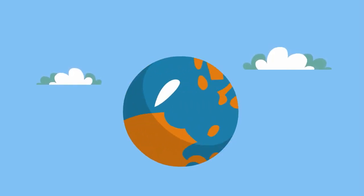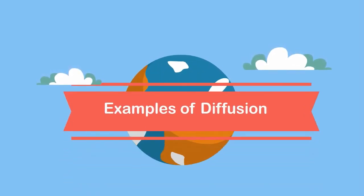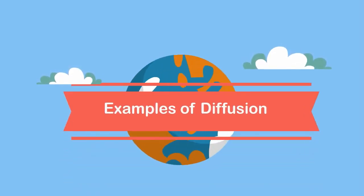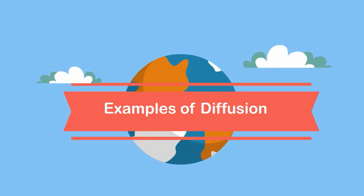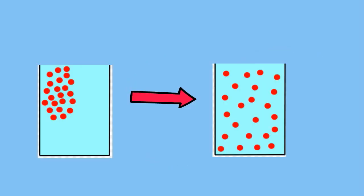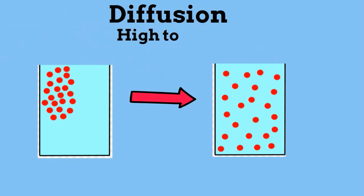Welcome to Moo Moo Math and Science. In this video I would like to show some examples of diffusion. Diffusion is when objects move from an area of high concentration to an area of low concentration.